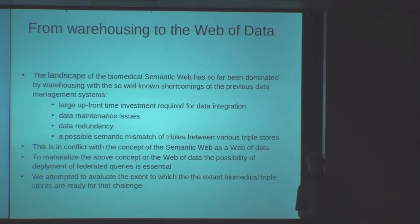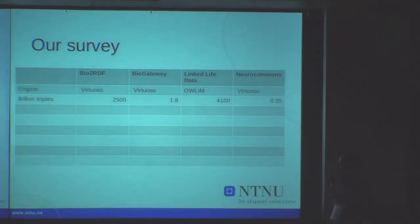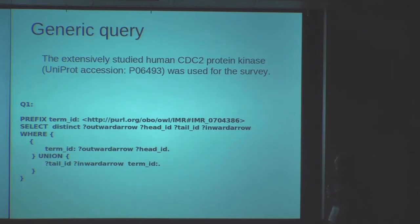Having stressed the importance of federated querying and our intention to evaluate to what extent the available resources are supported, we selected these four triple stores, varying strongly in their size. We used a simple query which returns the local environment of one particular concept — in this case, the protein CDC2 — which is present in all four triple stores.